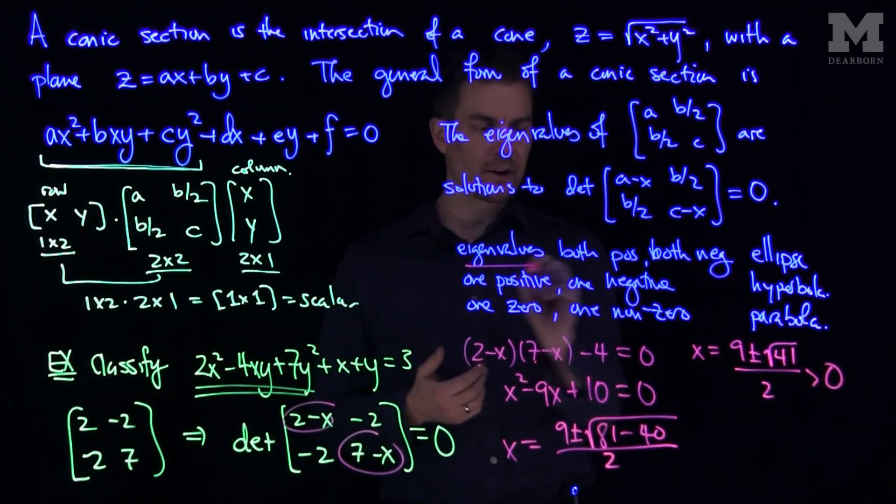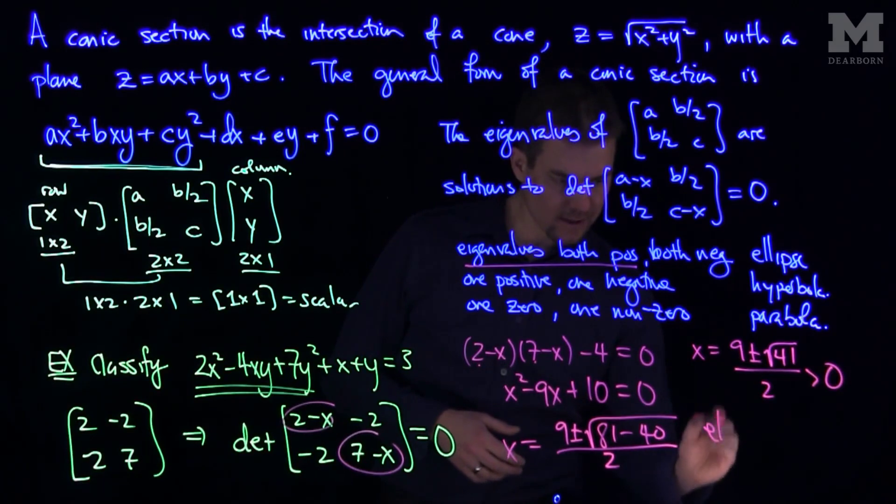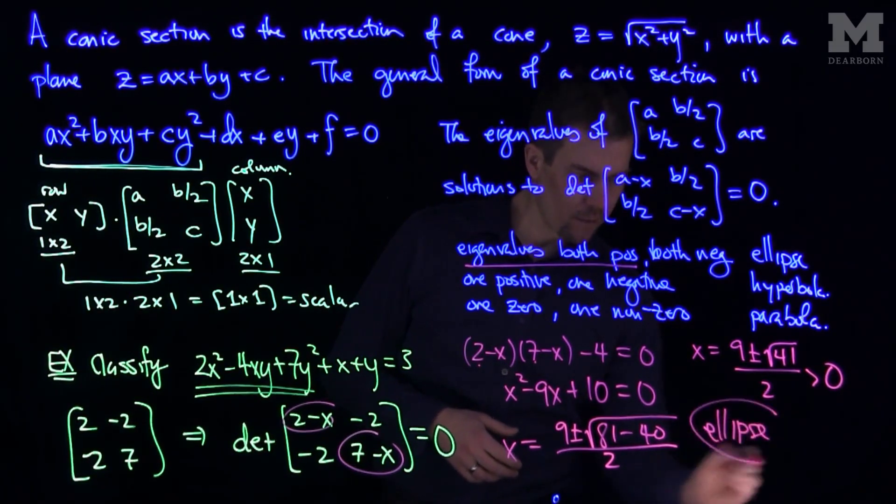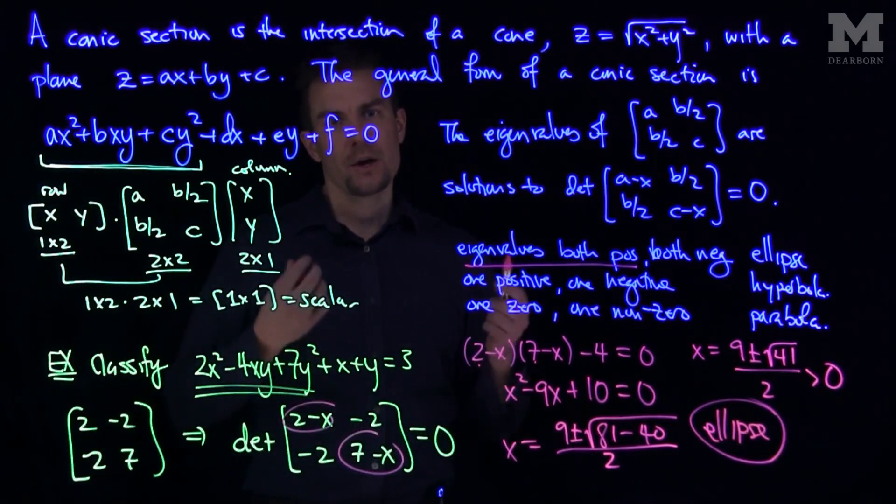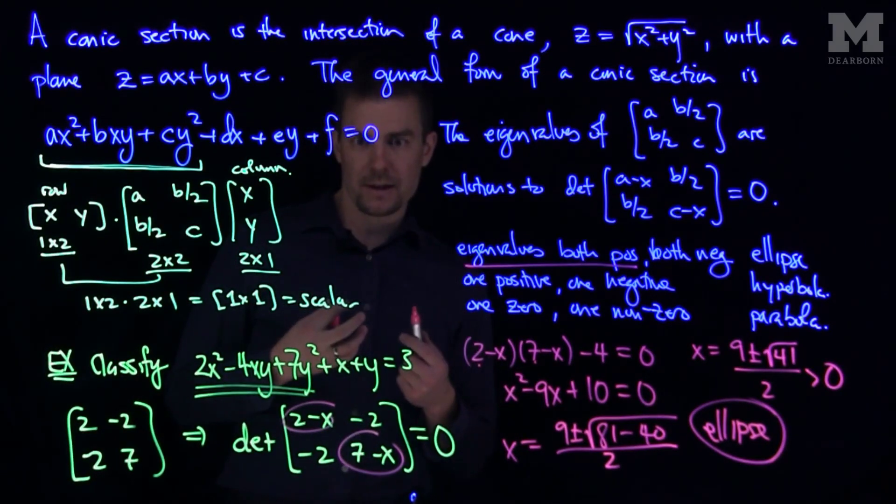So we have eigenvalues which are both positive, therefore this is classified, this shape will be an ellipse when you plot it.